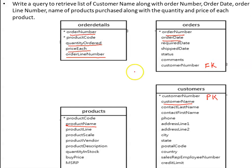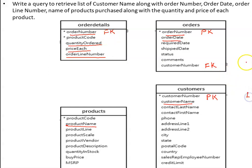Is there any association between the orders table and the order details relation? Yes. Order number, which is acting as a primary key in the orders table, is acting as a foreign key in the order details table. So here also there is an association, and the relationship between orders and order details is one-to-many.